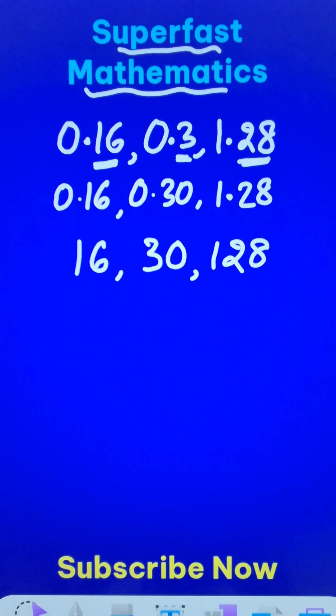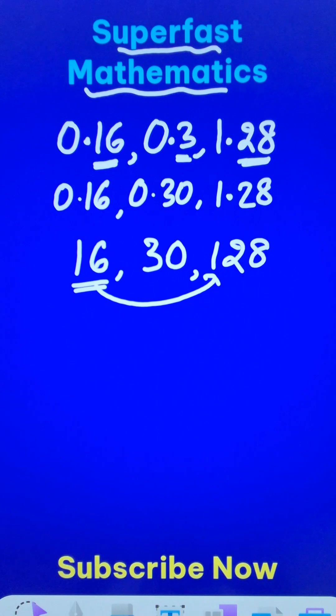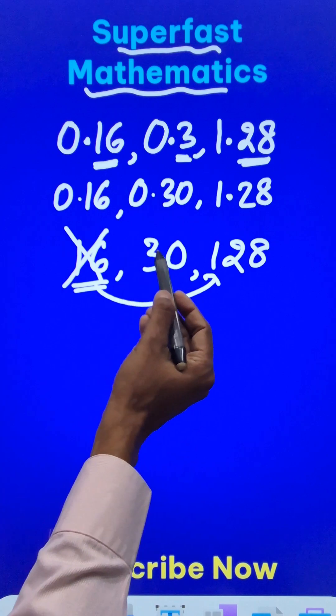Now fortunately, I can see that 16 divides 128 exactly and therefore 16 is not to be considered for finding the LCM. All I need to do is find the LCM of 30 and 128.